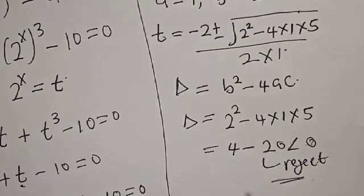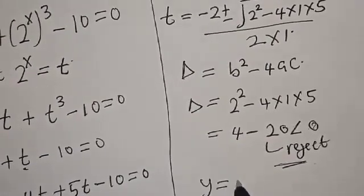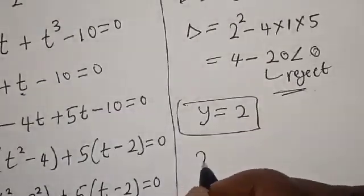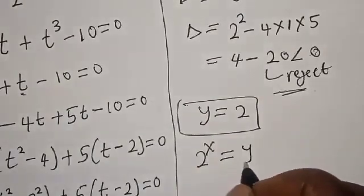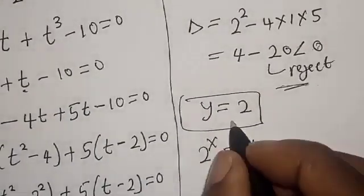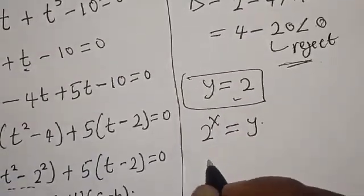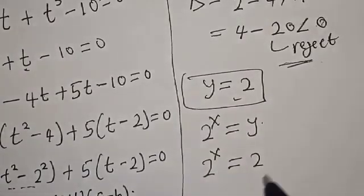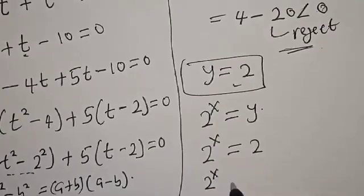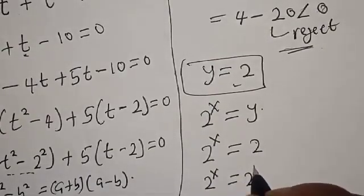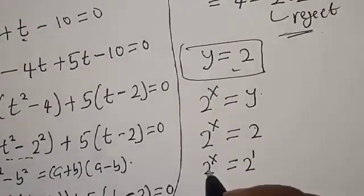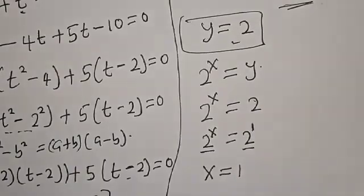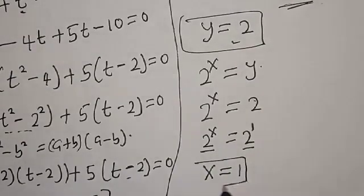Therefore, the real solution is t equals 2. But remember that 2 raised to power x equals t, and t equals 2. So 2 raised to power x equals 2, which is the same as 2 raised to power 1. Since they have the same base, x equals 1. That is the real value of x we are looking for.